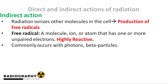As for the indirect action of radiation on the critical target, the radiation does not directly ionize the critical target. Instead, it interacts with other molecules in the cell such as water molecules. By interacting with these molecules, free radicals are produced. A free radical is a molecule, ion or atom that has one or more unpaired electrons.